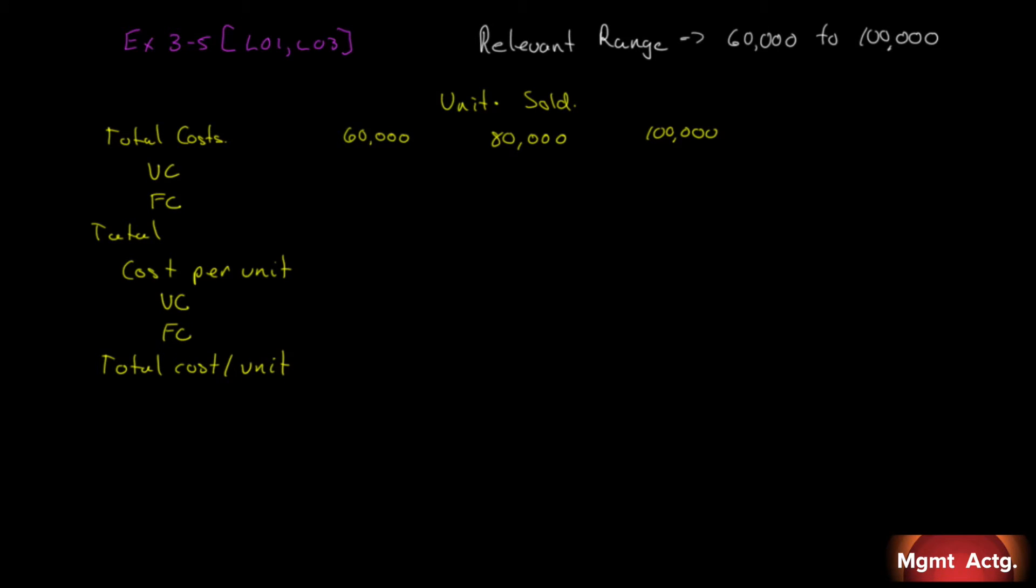And here is what we're given. Out of all of this, we're given our variable costs here of 150,000 and our fixed costs here of 360,000 for a total cost of 510,000. That's all we're given. And we're asked to fill in all the rest of this, the three numbers down here and all of these. So how do we begin?